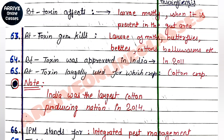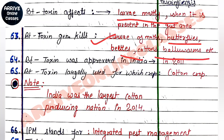BT toxin was used as a toxic agent against pests and insects. The effect was mostly on larvae, affecting the gut area of the organism. BT toxin generally kills the larvae of moths, butterflies, beetles, cotton bollworms, and similar pests.